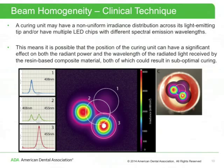This means the position of the curing unit can have a significant effect on both the radiant power and the wavelength of the radiated light received by the resin-based composite, both of which could result in sub-optimal curing. For example, if placing a Class I restorative with a diameter of about 4 mm using a material with camphorquinone as the photo initiator, it's possible the curing unit can be positioned such that circle 1 corresponds with the restoration area, meaning the energy deposited will not be at the proper wavelength to optimally interact with camphorquinone, resulting in sub-optimal curing.